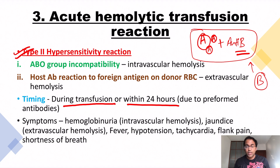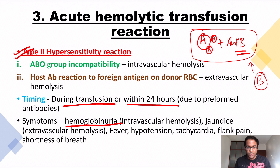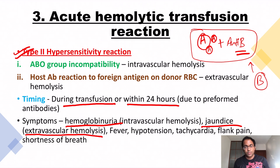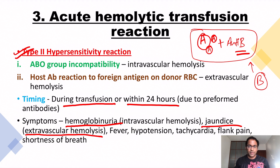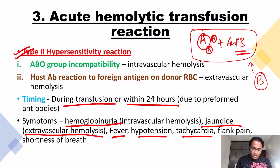The symptoms include massive intravascular hemolysis, hemoglobinuria (hemoglobin in the urine), and jaundice. Jaundice is due to extravascular hemolysis — massive amounts of bilirubin are released, causing scleral icterus, yellowing of the conjunctiva, and yellowing of the skin. We could also have fever, hypertension, tachycardia, flank pain, and shortness of breath.